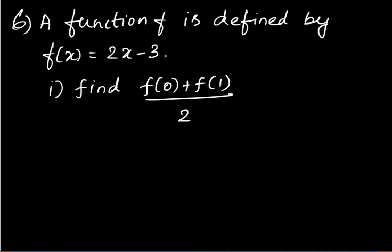Sixth question: function f is defined by f(x) = 2x − 3. Find [f(0) + f(1)] / 2. To find this value, you need f(0) and f(1). Find them separately and then substitute.